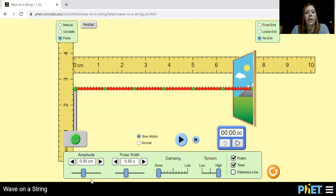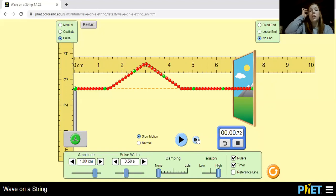Reset. Now let's bring the amplitude up to 100. Send the pulse through. Very big now. And again, it's 0.72. So amplitude does not affect the time of a wave.